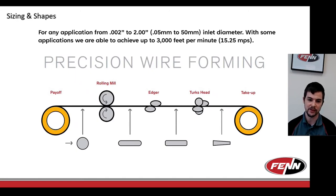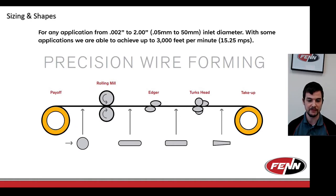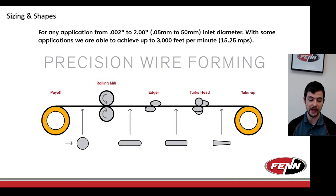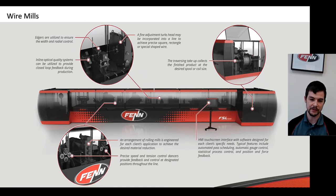In terms of wire application size, we cover a wide range — roughly from 0.002 inches up to about two inches in diameter at inlet. We've done applications larger than two inches, but at that point the material is usually not running in coil form. We've run very slow setup lines and very high-speed production lines, with top speeds near 3,000 feet per minute.